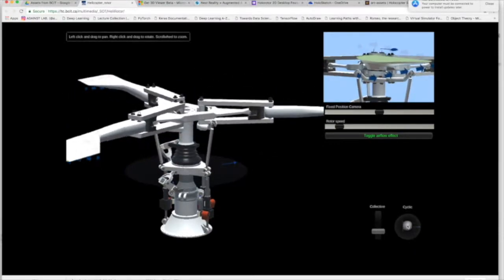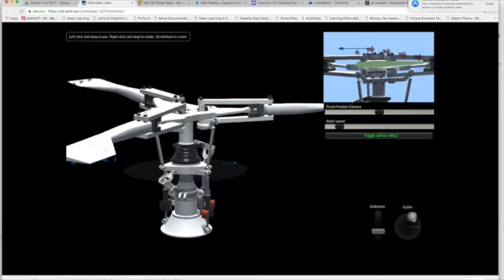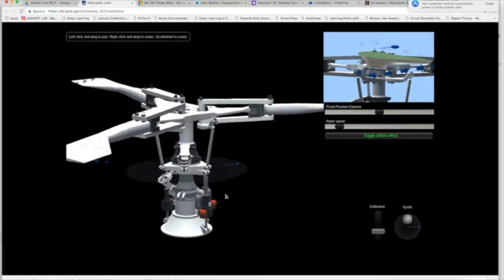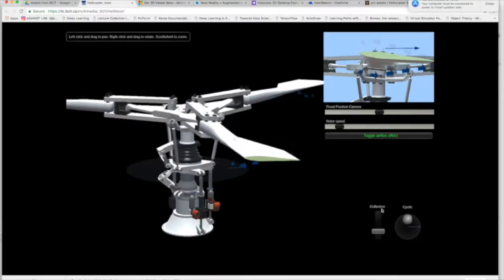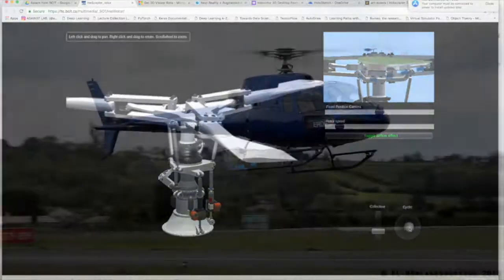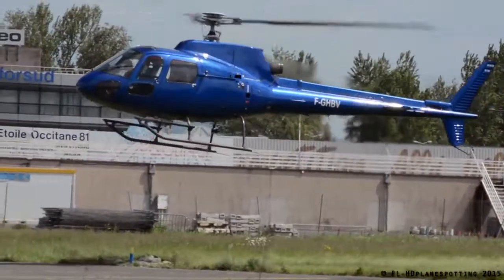The user is able to manipulate controls to affect the rotor. The collective pitch of the blades, the cyclic pitch of the blades, the speed of the rotor, visibility of the airflow and display controls could all be manipulated to help students understand what these controls do to the flight dynamics of a helicopter.